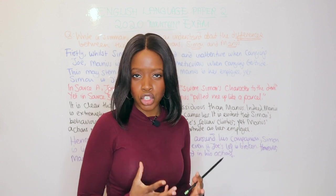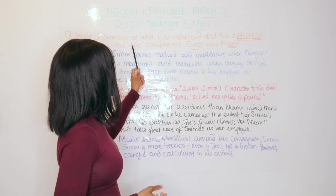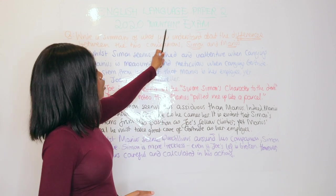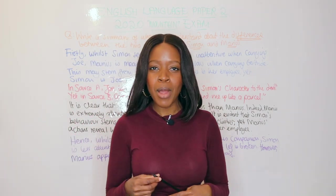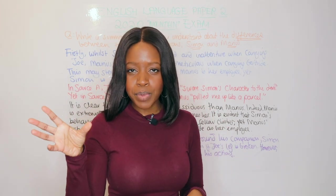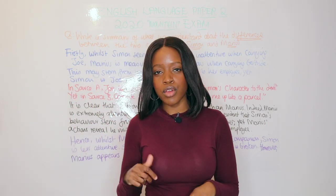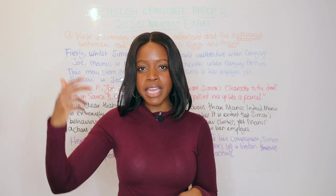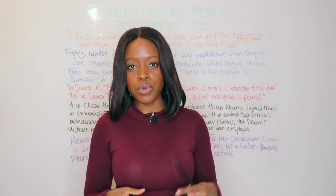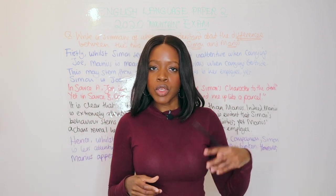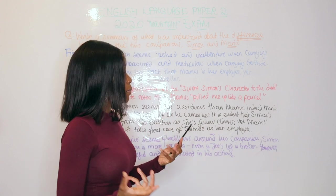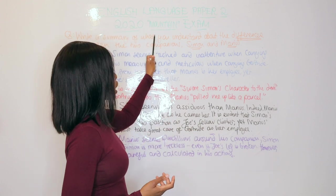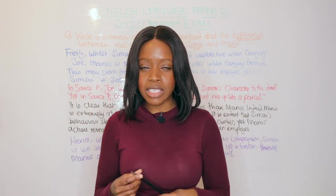I'm going to use the 2020 mountain exam paper as my example. This is the exam where you have Gertrude Bell in Source B — a Victorian author who climbs the Meije — and you also have Joe Simpson, who is in Peru scaling a mountain. This is the question paper in case you want to check it out.